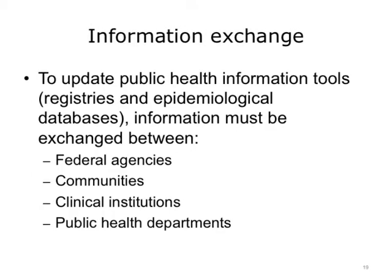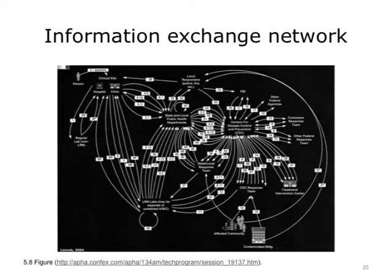Here is a visual representation of the cycle of public health information exchange, showing the many components in the information flow between health institutions. These organizations represent the main nodes of the information network, and all are required to maintain this flow of information so that we can study and maintain the population's health. A more complex slide shows the relationships between clinical sites, state, local, and federal public health departments, the CDC, communities, state and local response teams, and treatment intervention centers.